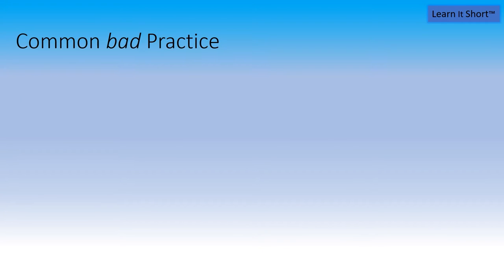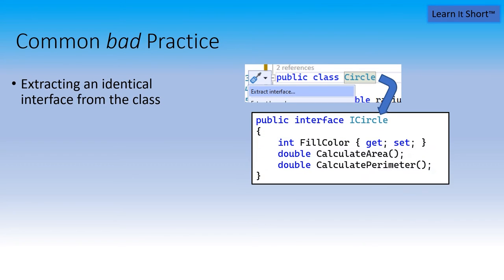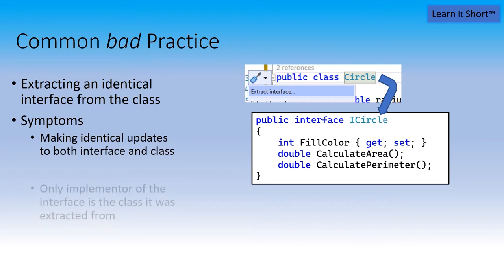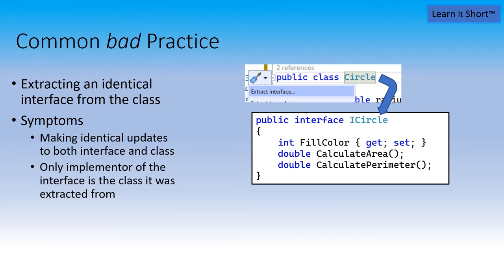What we see happen so much of the time in bad code or bad design is extracting an identical interface that really doesn't accomplish anything. And here are some of the symptoms of why that's a bad idea. We have a class now and an interface that are identical. So every time we add a property or we add a method or we do anything to either the interface or the class, we have to make the same change to the other. Another smell that we recognize is that there's only one implementer of this interface, and it's the class that it was extracted from.